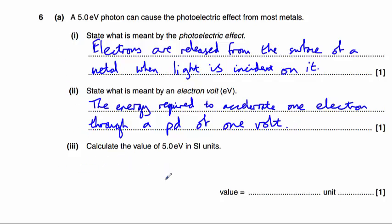Part three, calculate the value of five electron volts in SI units. The SI unit for energy is the joule, so 5.0 multiplied by the charge of one electron, which is 1.6 times 10 to the minus 19. That is the conversion factor between joules and electron volts. This gives us 8 times 10 to the minus 19 joules.